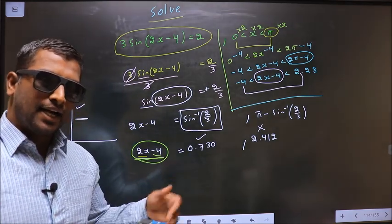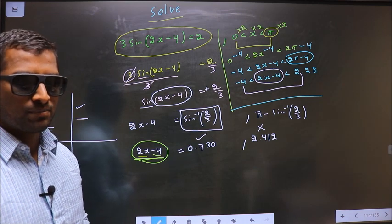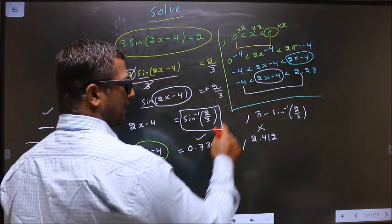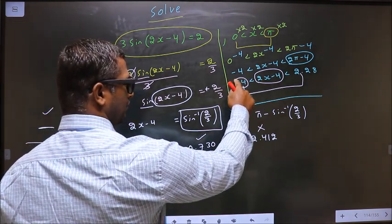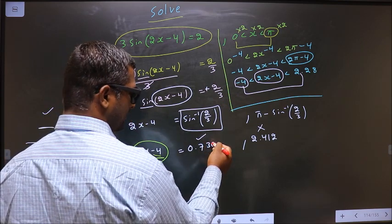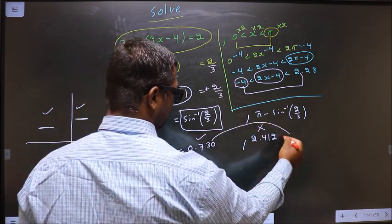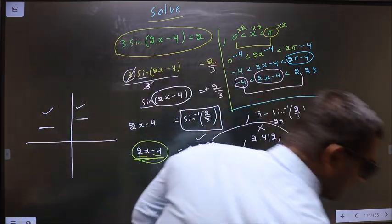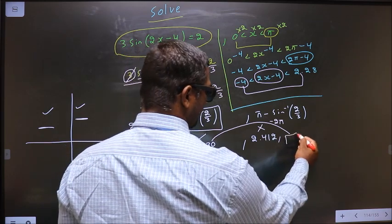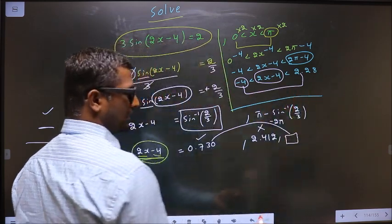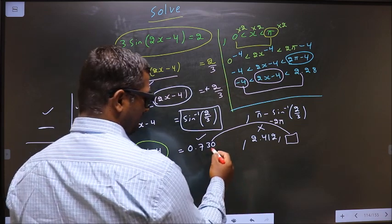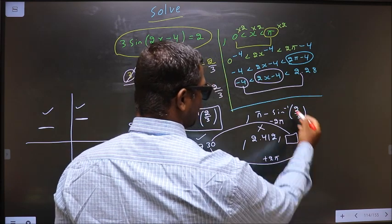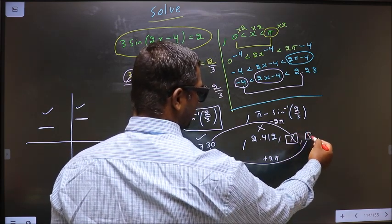How will I get other values for 2x - 4? Either by adding 2π or by subtracting 2π. Here I have negative 4. So what if I subtract 2π to this? If I subtract 2π, we get a value that is not in this interval. Same, even if I add 2π to this, I still get a value that is not in the interval. So even this you reject.